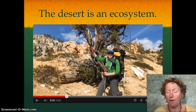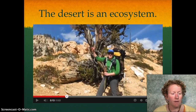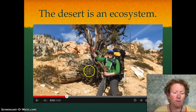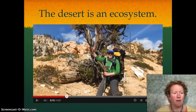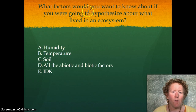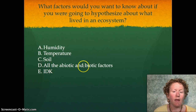There is a really good video, which I will put in the notes, about abiotic and biotic factors. In the desert, abiotic factors kind of rule — the sand, the temperature, and the rainfall are all really important parts of controlling what can live in the desert. What factors would you want to know if you were going to hypothesize about what lived in an ecosystem? Humidity, temperature, soil — all of the abiotic and biotic factors.